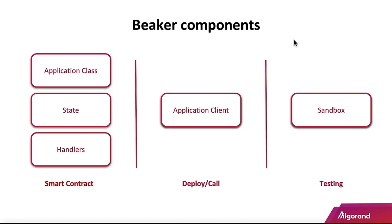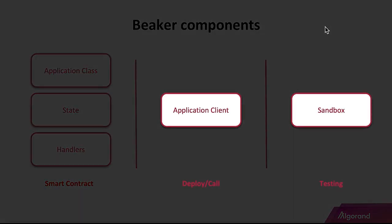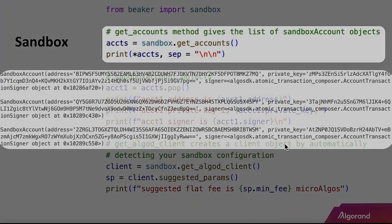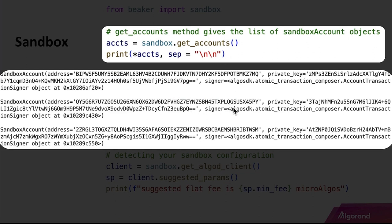Recap of the smart contract piece: you have an application class as the base class you inherit from, providing all basic functionality. You can handle application state and account state, as well as things exposed to the ABI and those not exposed, using the internal decorator. External, internal, bare externals, and authorization are the pieces that belong to decorators. For deployment: at the sandbox you can grab accounts, pop one off, and you're up and running with a couple of lines of code. You use the AlgoD client from the sandbox and get suggested params from that client — import sandbox from Beaker.